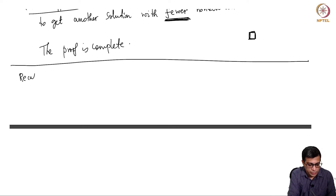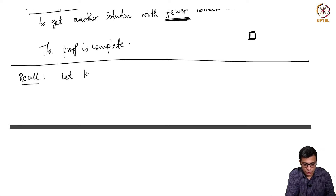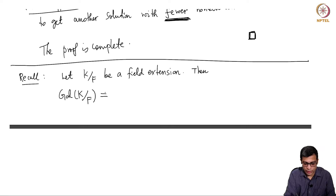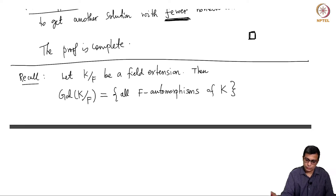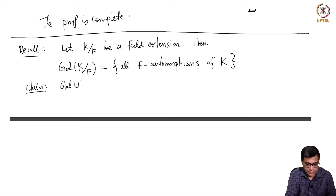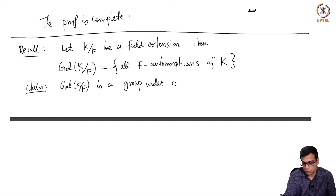Let me quickly recall something from an earlier video. Let K over F be a field extension. Then the symbol Gal(K/F) represents all F-automorphisms of K. This is a group under composition.